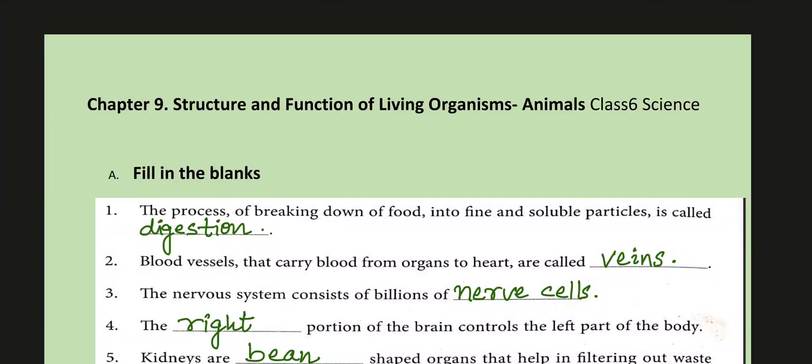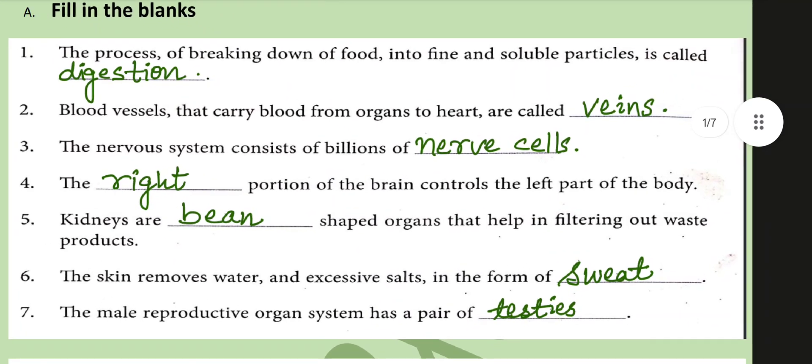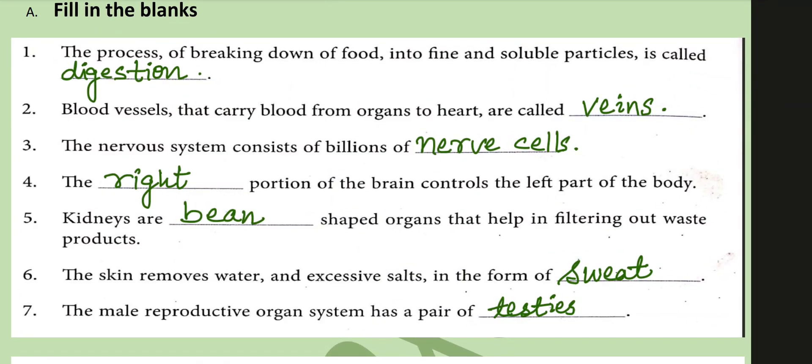Chapter 9: Structure and Function of Living Organisms — Animals. It has two parts: plants and animals. So chapter 9 is about animals. Fill in the blanks: the process of breaking down of food into fine and soluble particles is called digestion. Blood vessels that carry blood from organs to the heart are called veins.